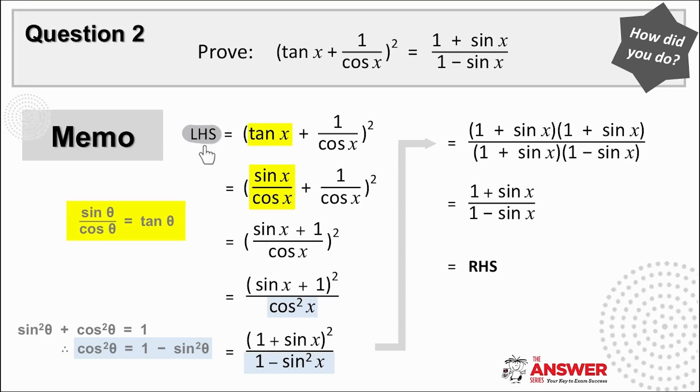Let's start with the left hand side. Did you notice that there was a tan on the left but that the right hand side was all in terms of sine? This is a clue to use the tan identity. You now have both fractions with a denominator cos x, which means we can add the fractions easily.